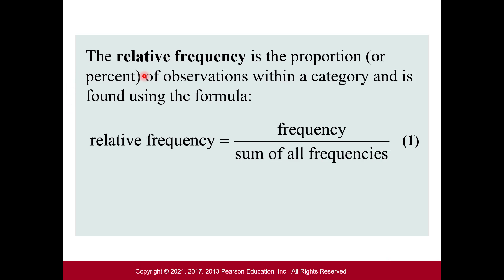Now let's talk about relative frequency. Frequency is how many occurrences something had. Relative frequency is the proportion or percent of observations within a category. Basically, relative frequency is the frequency divided by the sum of all frequencies — you're relating the frequency to the total.